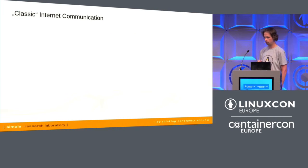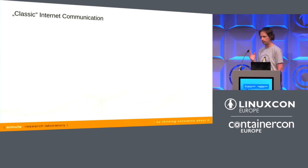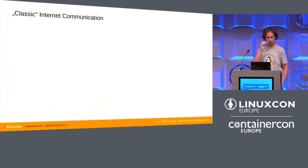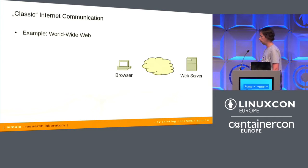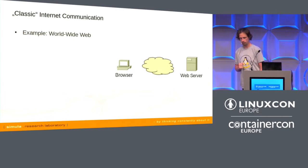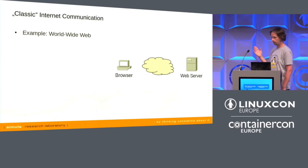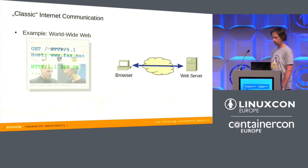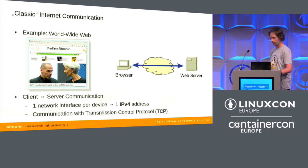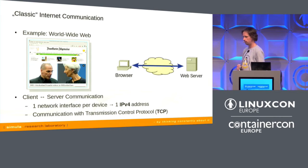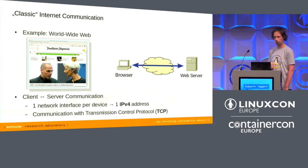Let me give an introduction of how classic internet communication works. Classic internet communication, for example, is accessing the worldwide web. When you use your web browser, it makes requests to a web server for certain objects. The web server delivers these objects and the browser displays the result. We have a classic client-server communication where both devices have one IPv4 address and communicate over TCP. This is how the internet has worked for many years.